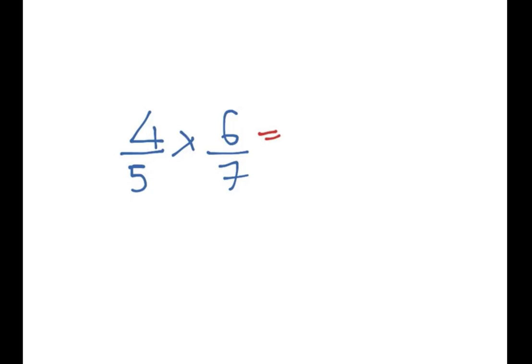In this scenario, once again, we just do 4 times 6, which is 24. And we do 5 times 7, which is 35. And there we have it.